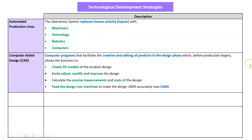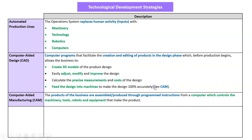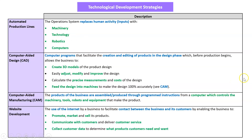Computer-aided design uses a computer program to design the product — 3D models — so we can easily change it and get precise measurements. We then feed those computer instructions and code into computer-aided manufacturing. It sounds like automation but it's a little different: products are assembled through programmed instructions from a computer which controls the machinery, tools, robots, and equipment, but there is a person controlling that, so it's a really skilled job, whereas automation replaces jobs. Lastly, website development is the use of the internet to facilitate contact between the business and its customers — to promote, market, and sell, communicate with customers, deliver customer service, and collect customer data to serve customers better.